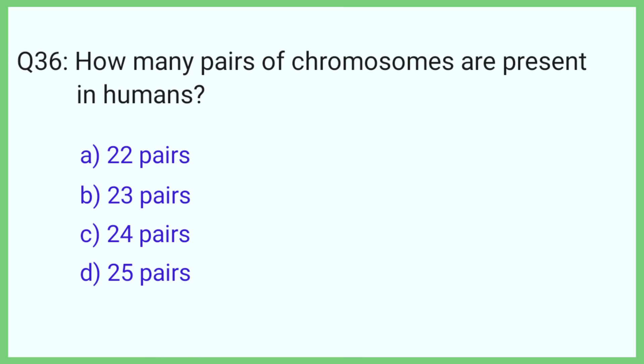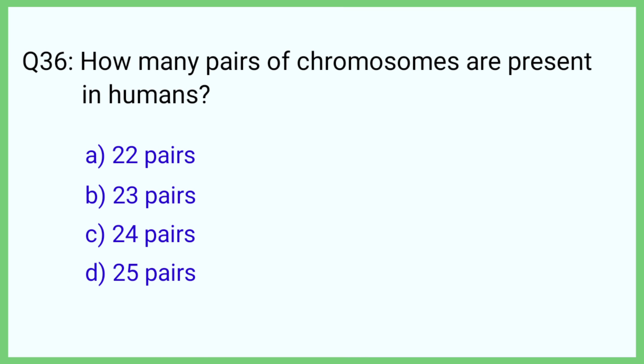Question number 36. How many pairs of chromosomes are present in humans? The correct answer is option B: 23 pairs.